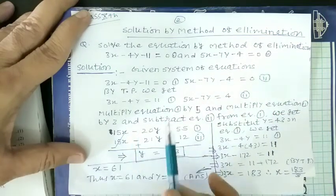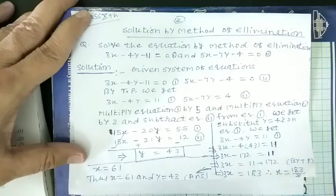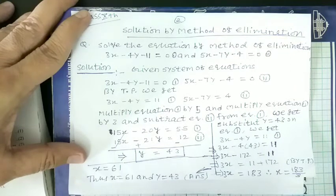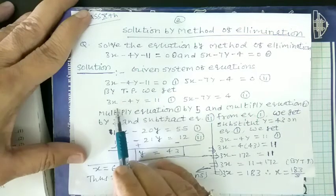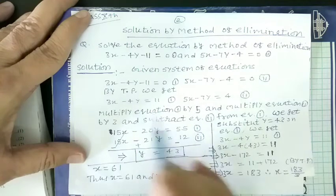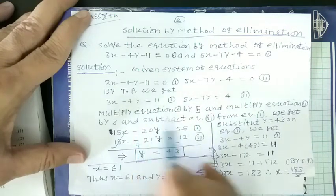Now, here we want to eliminate one variable. You can eliminate x or y. Just take the variables whose coefficients are minimum. Here, 3x and 5x, minus 4y and minus 7y. If we want to eliminate x, then we multiply.